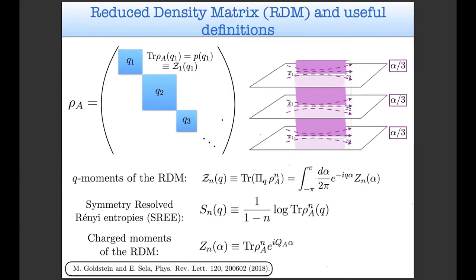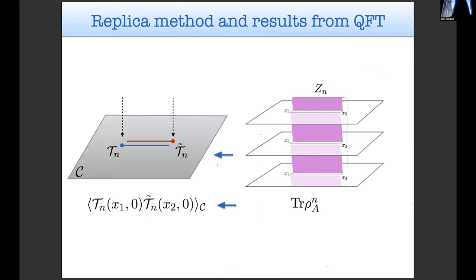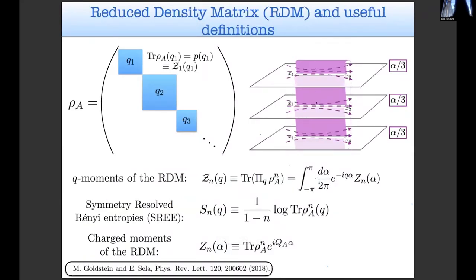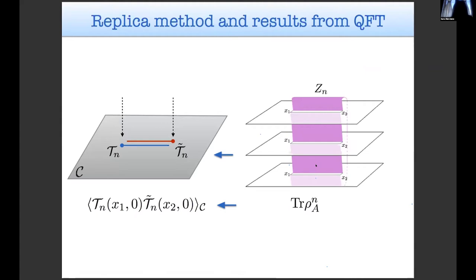We want to compute the partition function on these n-sheeted Riemann surface with insertion of a flux which is such that once the field goes around the entire surface it will pick up a phase which is alpha. We can use some standard techniques in quantum field theory in order to compute these partition functions, basically using for example the fact that it can be computed as a two-point function of a twist field whose role is to implement the boundary condition of the field at the entangling point.